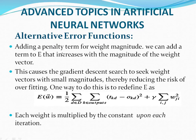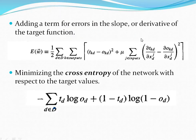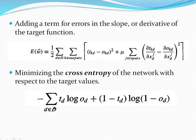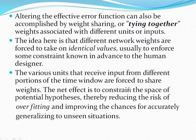To summarize, the alternative error functions we covered are: first, adding the penalty term; second, adding the derivative of the target function to the error function; third, minimizing the cross entropy; fourth, tying together weights associated with inputs; fifth, assigning identical values to all weights; and sixth, forcing different portions of the time window to share weights. Most of these are used to reduce the risk of overfitting.